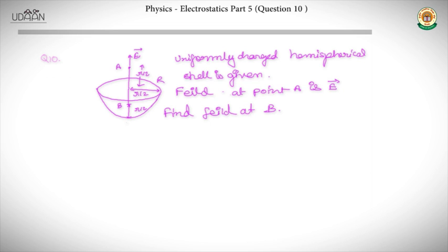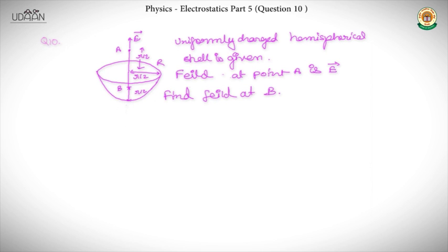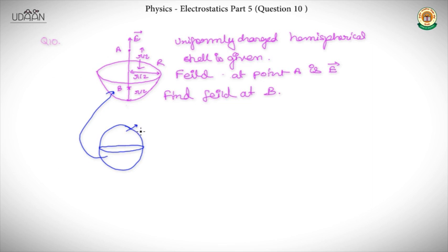This tricky problem can be solved using the superposition principle and additivity of charges. Assume that a shell is made of two parts: one part is the original shell, and it can be represented as two overlapping shells — one positively charged shell and one negatively charged shell — that together make overall zero charge.